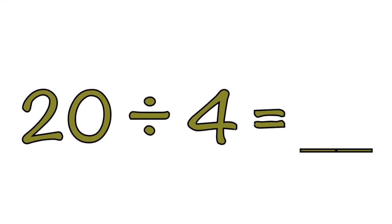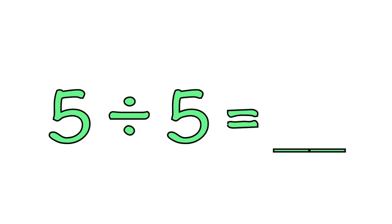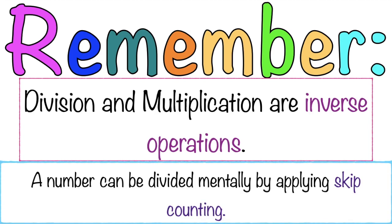How about 20 divided by 4 equals blank? The quotient is 5! Let's skip count by 4 until we reach 20 — 4, 8, 12, 16, 20. That is 5. How about 5 divided by 5 equals blank? That's so easy — the quotient is 1! Because when you divide the same number, the quotient is 1. Always remember, children, division and multiplication are inverse operations, and a number can be divided mentally by applying skip counting.